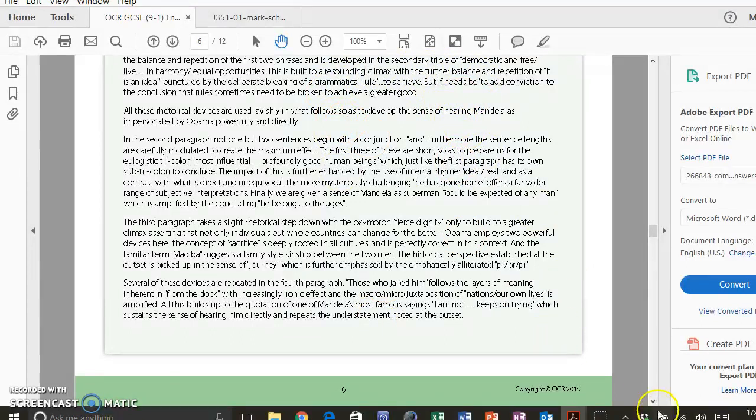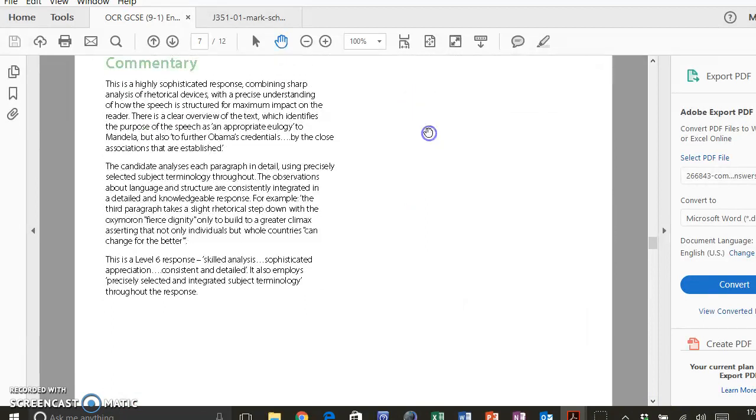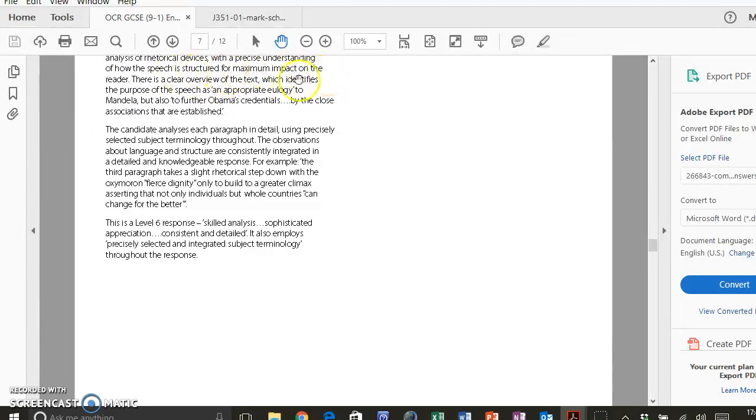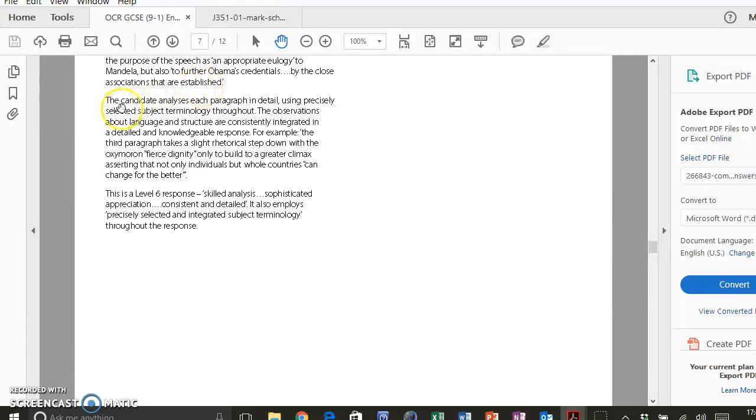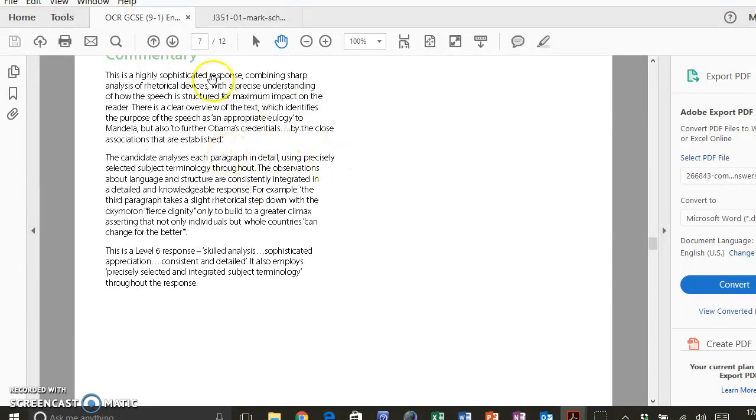So we don't have time to read all of this, but let's have a look at the examiner commentary as to why this is such a good response. So the examiner writes, 'This is a highly sophisticated response combining sharp analysis of rhetorical devices with a precise understanding of how the speech is structured for maximum impact on the reader. There is a clear overview of the text, so a clear understanding which identifies the purpose of the speech as an appropriate eulogy to Mandela, but also to further Obama's credentials by the close associations that are established. The candidate analyzes each paragraph in detail using precisely selected subject terminology. Throughout, the observations about language and structure are consistently integrated,' that means embedded, 'in a detailed and knowledgeable response.'